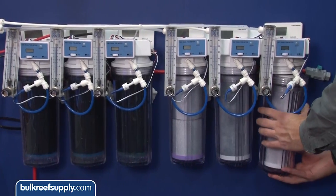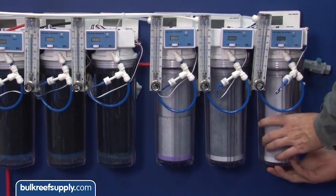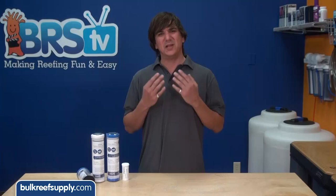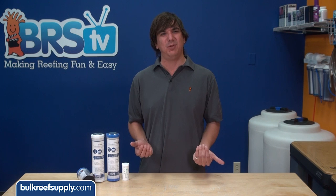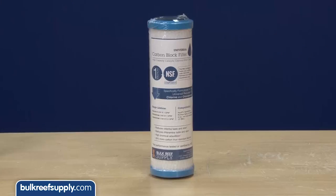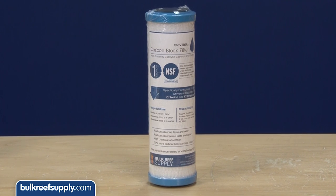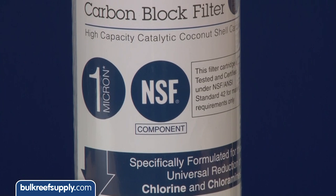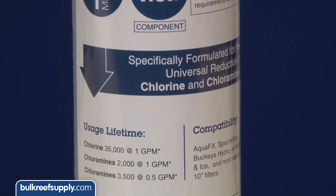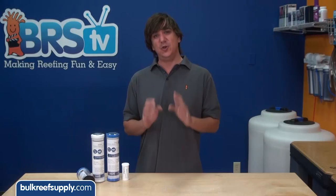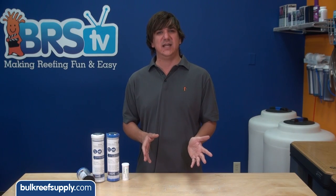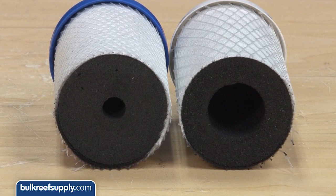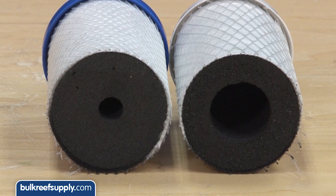This is why we spent the last year testing carbon from all the world's leaders in carbon block technology. What we really want is a block that universally covers as many water sources and contaminants as possible, because none of us want to research our water supplies and figure out what filters to use. The 1 micron BRS universal block is the highest performing block in our industry at treating for chlorine and chloramines, and it is also one of the highest performers at general chemical removal. We cut a BRS universal block in half as well as another block common in our industry, and you can see that our universal block simply contains way more actual carbon.